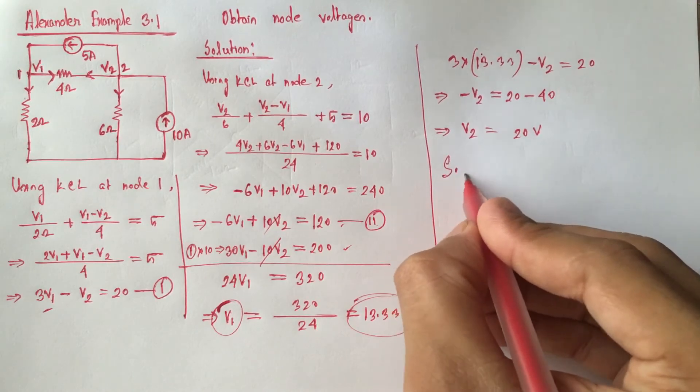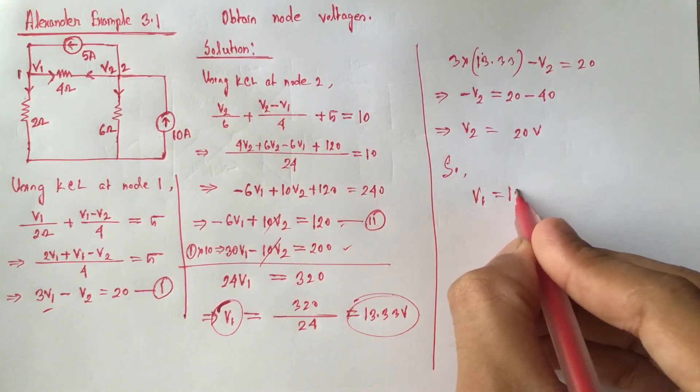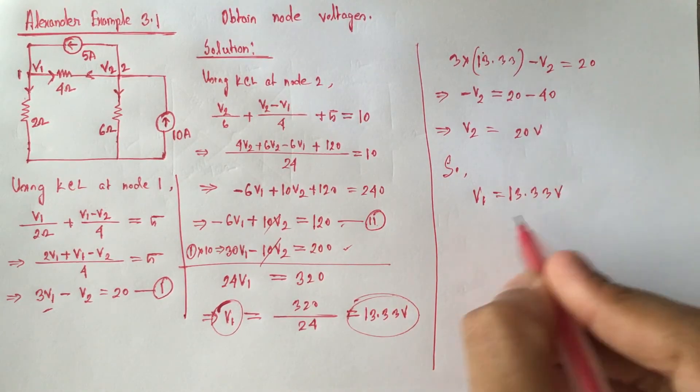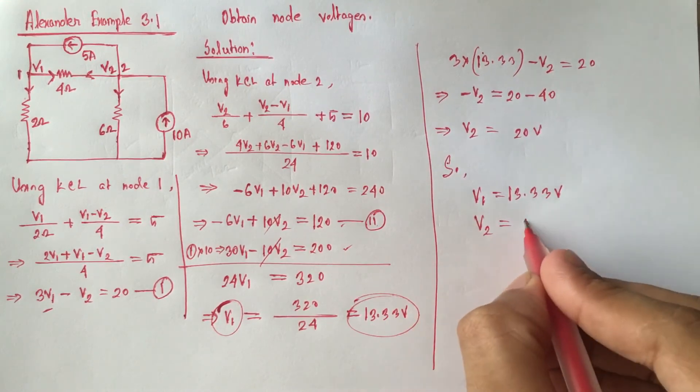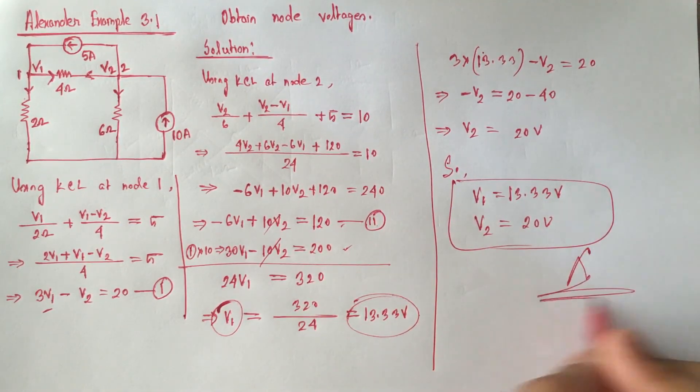Here we get V1 is equal to 13.33 volt and V2 is equal to 20 volt. These are the answers.